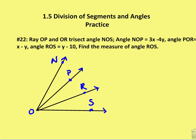In the first problem, we're asked to find the measure of angle ROS. We're given that ray OP and ray OR trisect the large angle NOS. We're also given that angle NOP is equal to 3x minus 4y, angle POR is equal to x minus y, and angle ROS is equal to y minus 10. So all three of these angles — NOP, POR, and ROS — are all congruent because OP and OR trisect angle NOS. So NOP equals POR, and it equals ROS.